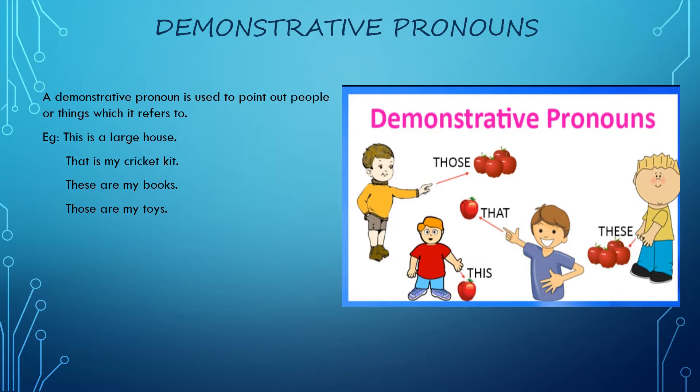This is used for a singular noun which is close to us. That is used for a singular noun that is far away from us. These is used for plural forms of noun that is close to us, and those are used for plural forms of noun that are far away from us. These are used to point out at some person or some people or some things.